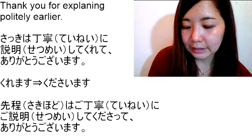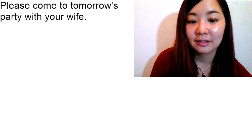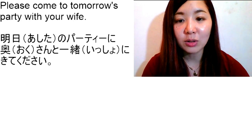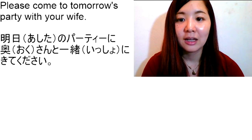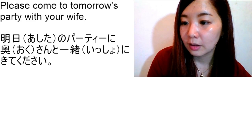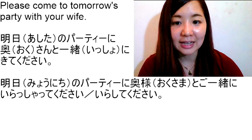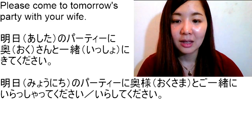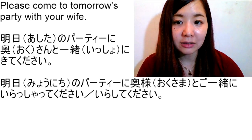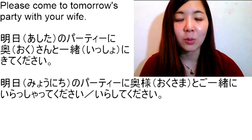The next one: 'Please come to tomorrow's party with your wife.' In a normal sentence: 明日のパーティーに奥さんと一緒に来てください。 In polite style: 明日のパーティーに奥様とご一緒にいらっしゃってください。 You can also say いらしてください — both いらっしゃってください and いらしてください mean 'come', so they have the same meaning.